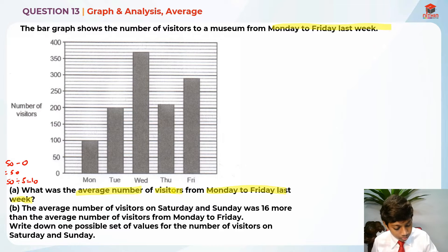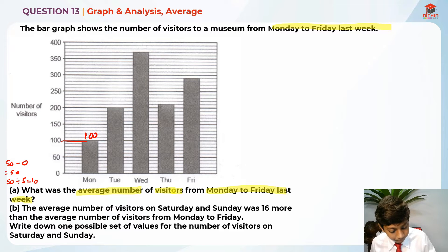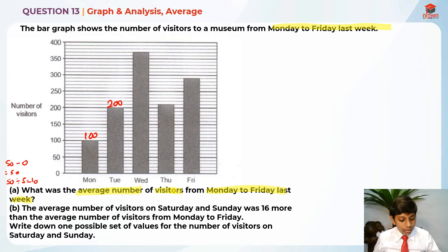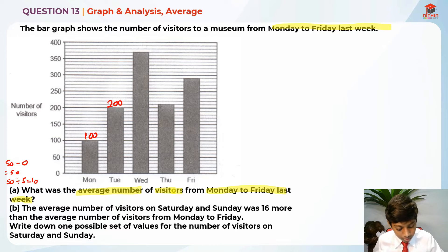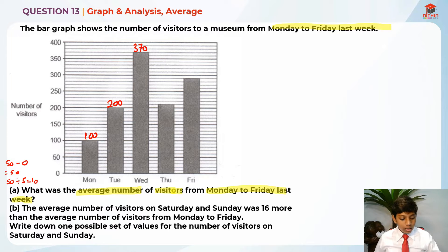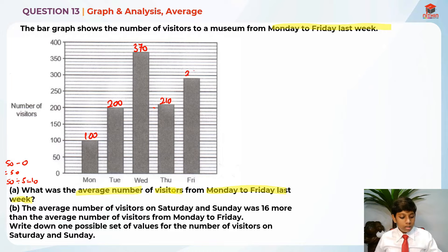So let's label all of them. Here it is pointing to 100, over here it is 200, over here it is 300. Another two lines over, so it is 350. Then 360, 370. After that here, 200 — one line over, so it is 210. Over here it is 300, one line below, so 300 minus 10 is 290.